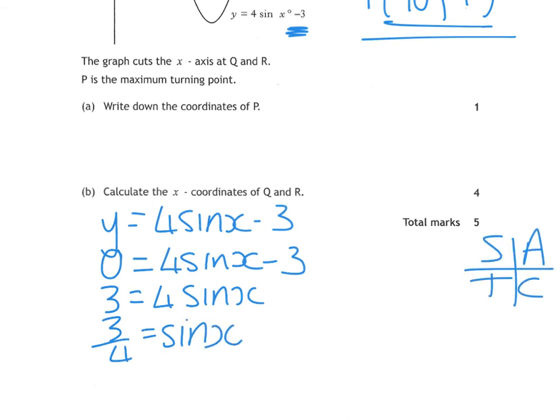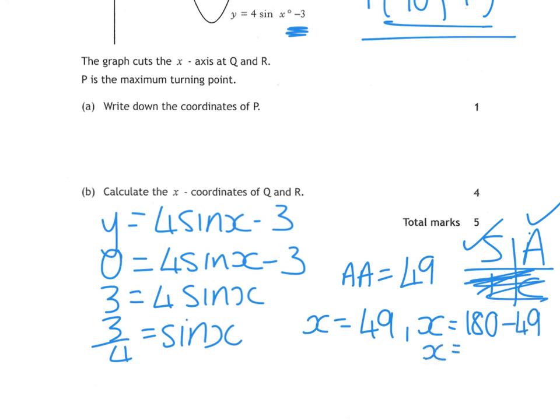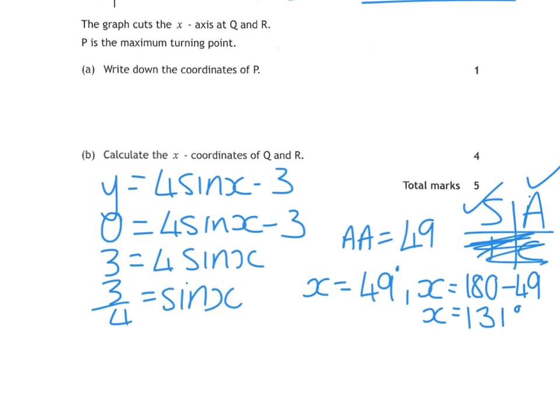It then wants you to get the coordinates of Q and R. The coordinates of Q and R are when y equals 0. We replace y equals 0 into our equation. We need to rearrange this so that you have sine x on its own. 3 equals 4 sine x, then 3 divided by 4 equals sine x. It's all sine tan cos tables. The fraction is positive, so we are using all and sine. You do shift sine of 3 quarters, and to nearest whole number that gives us 49. In the all box, X is 49. In the sine box, you do 180 take away 49, which gives you 131. So Q is 49, 0 and R is 131, 0.